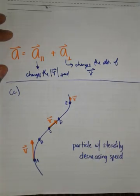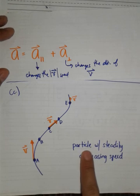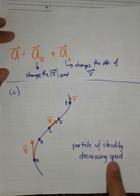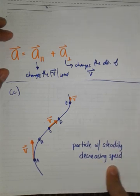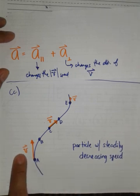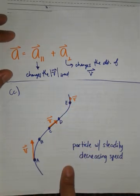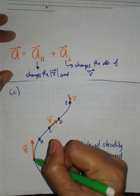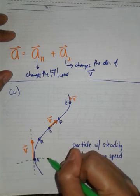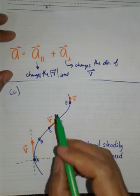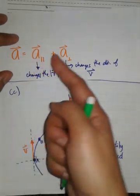And then, part C, we have the same path, the same sketch, but this time, the particle is said to be steadily moving with steadily decreasing speed. So it's slowing down gradually. So by inspection, the velocity vectors here get shorter and shorter.